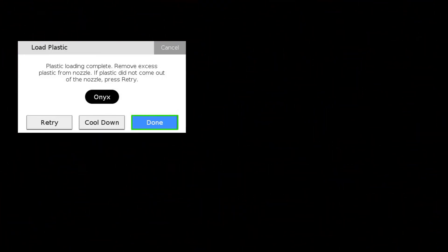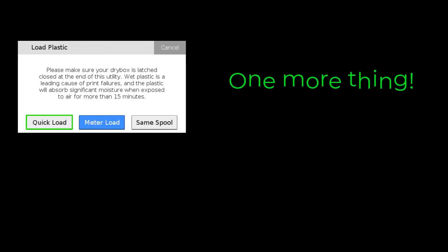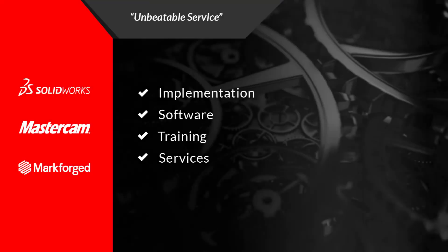Press done to exit the utility or press retry to continue extruding material. One more thing to take note of. Back on the load plastic screen, you have the option to quick load. This option is not recommended as it will not track or display the remaining material on the spool nor alert you when low on material.